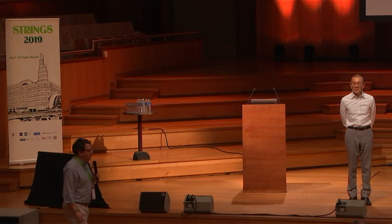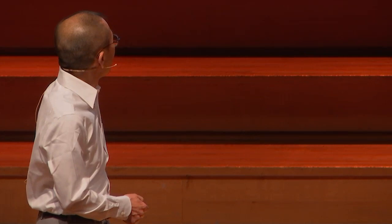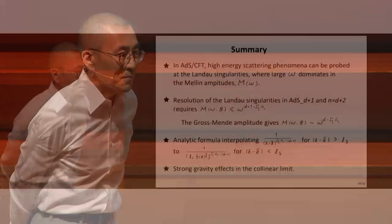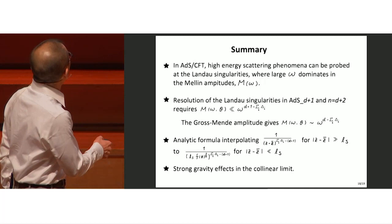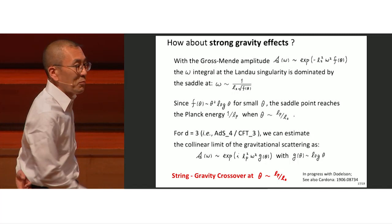David asks about the relation to his earlier attempts at this correspondence, specifically about placing a bound on the power p in the exponent of the amplitude. When you put a general power omega-to-the-p in the exponential, you still get the same power behavior for the Mellin amplitude. The speaker notes that the power of f depends on the power of omega for trivial reasons.